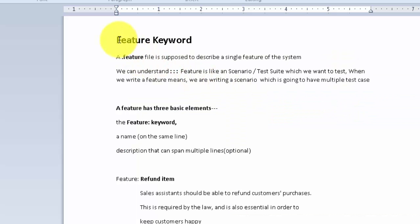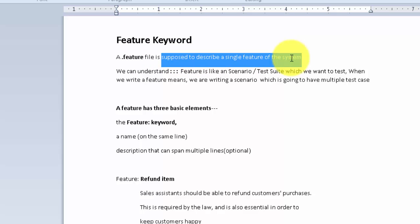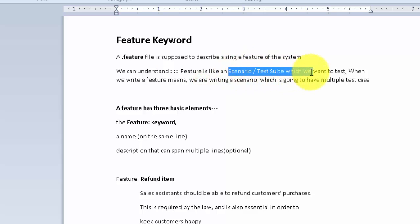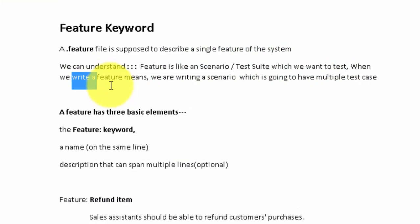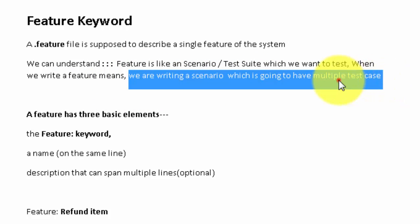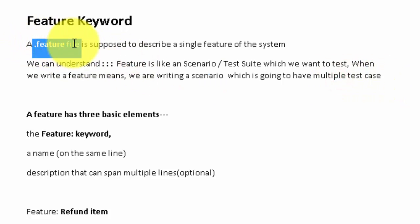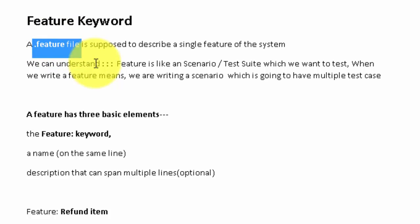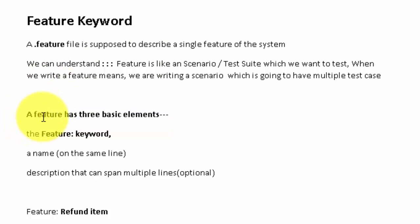First of all, let me tell you what the Feature keyword is. A feature file is supposed to describe a single feature of the system — meaning we are going to test one feature, which we call a test scenario or test suite. We can understand Feature as a scenario or test suite that we want to test. When we write a Feature, we are testing one scenario, and to test one scenario we can have multiple test cases. Each test case is called a Scenario. A feature file has three basic keywords.